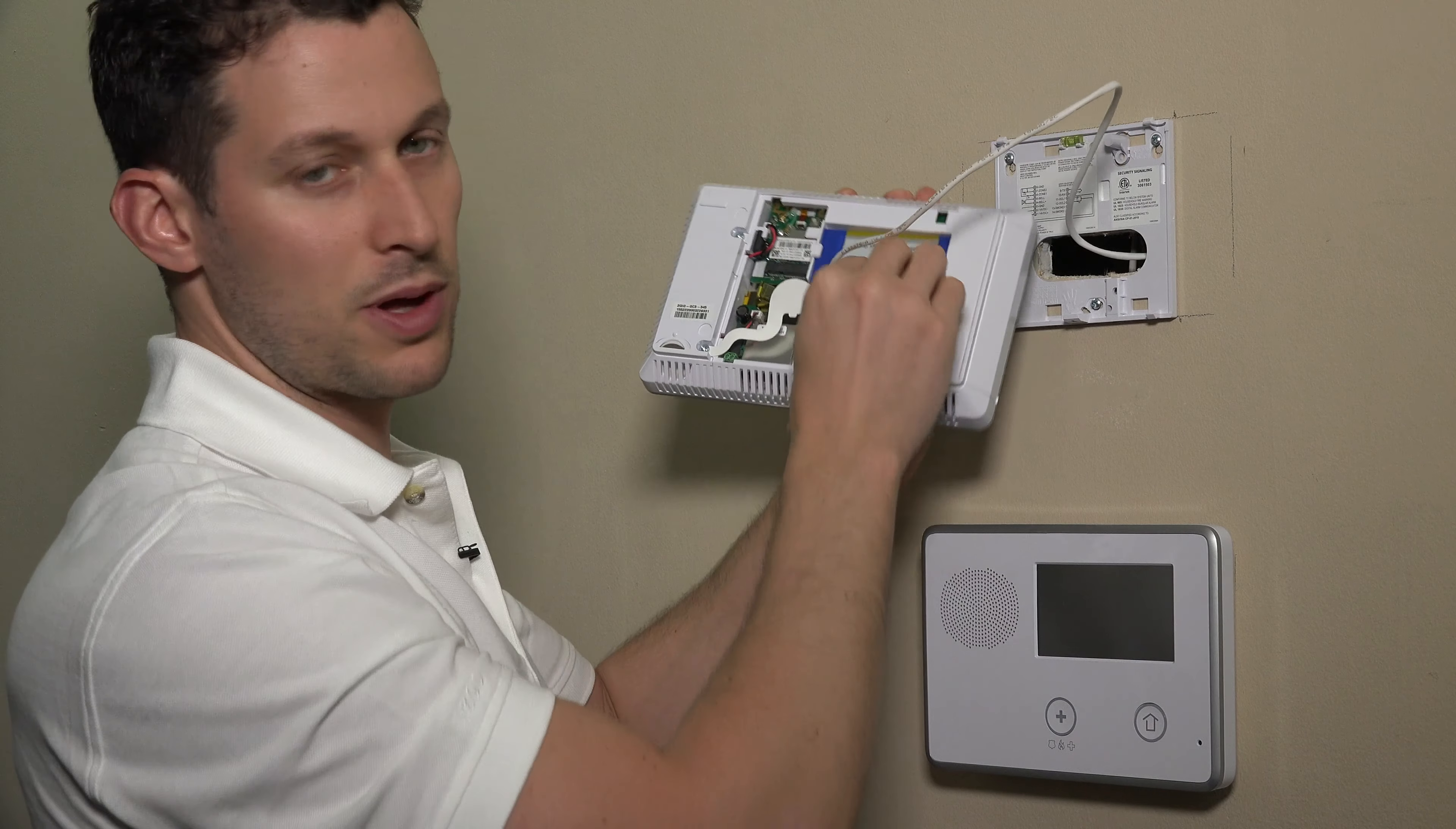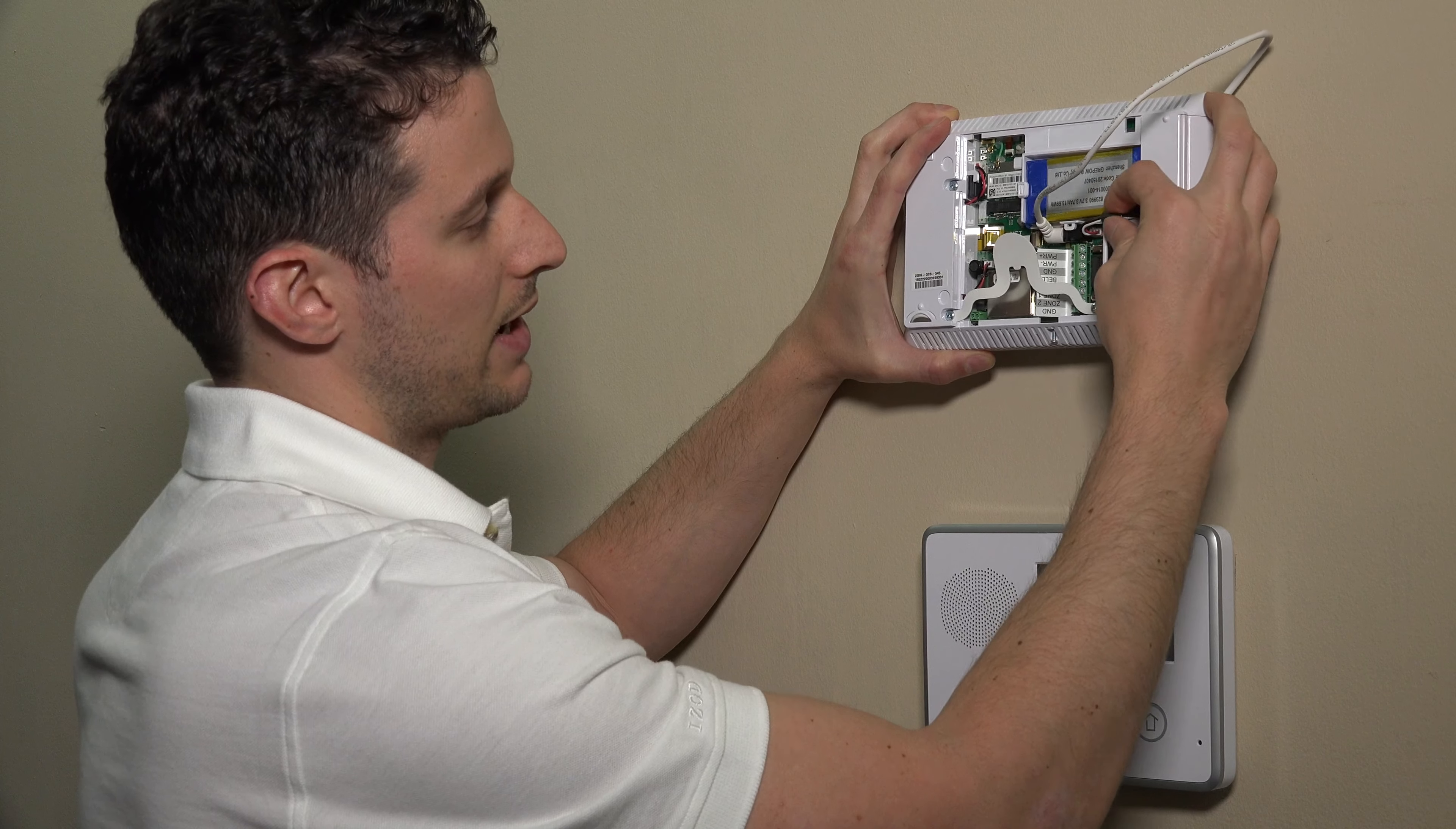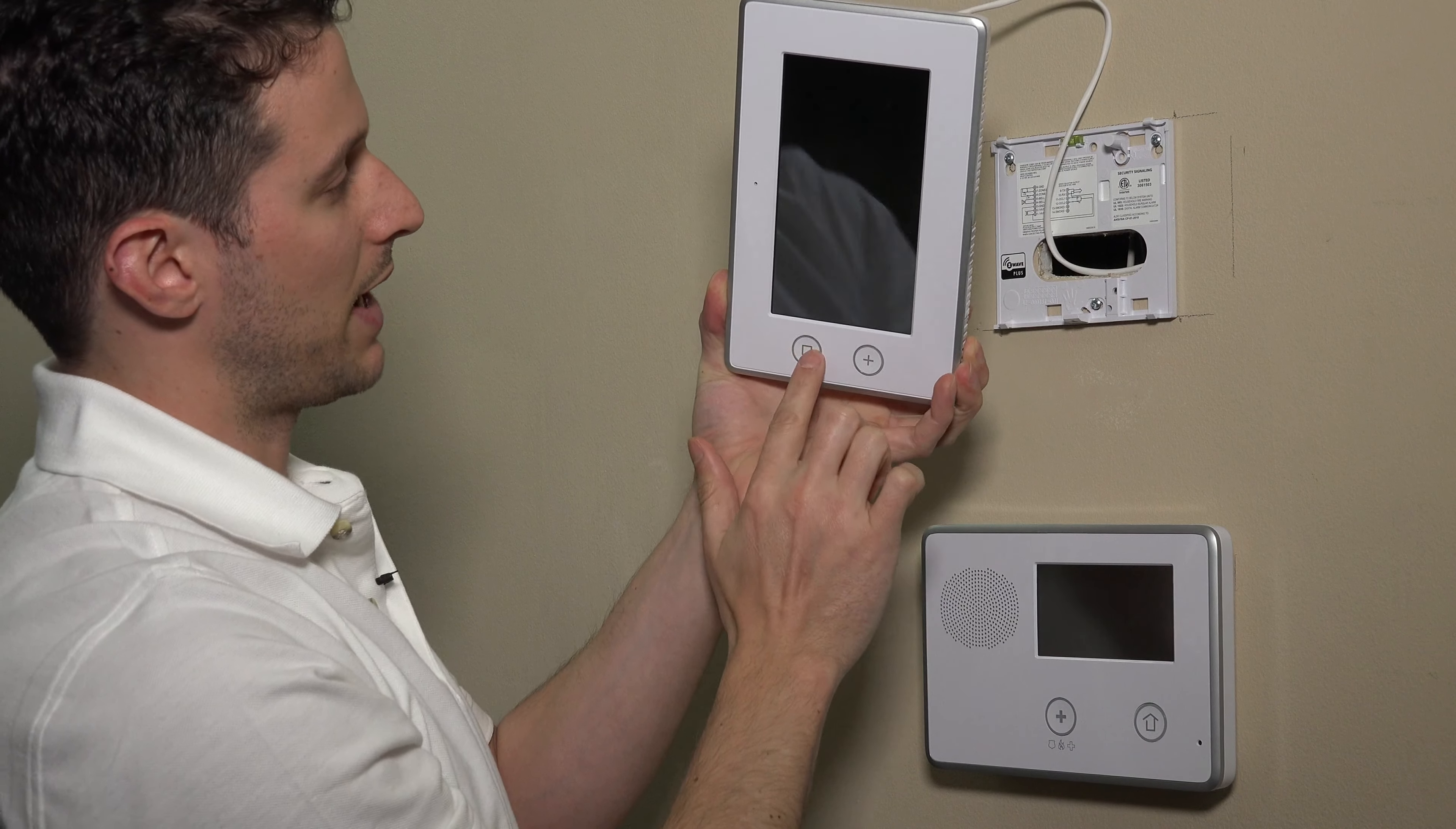And what we'll do next is unplug our battery. So just beneath the battery here, there's a little black clip. We can bring this wire out, slide it up, and you'll see our white clip for the battery connection on the board. We'll unclip that. And you see that we have it now unclipped. Panel is completely powered off.